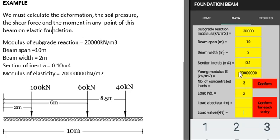We can select load number two, load abscissa six meters, and load value is equal to 60 kilonewtons. And I confirm by pressing in this box.